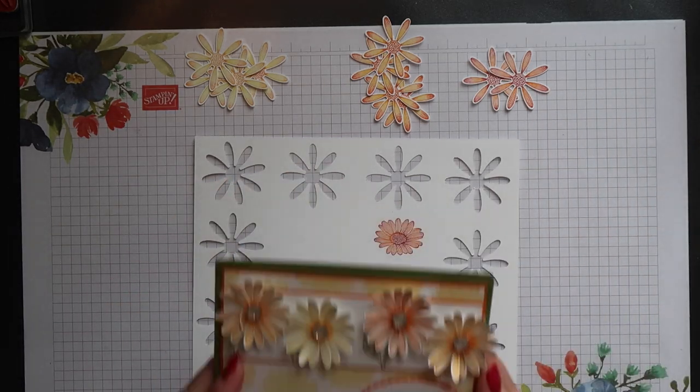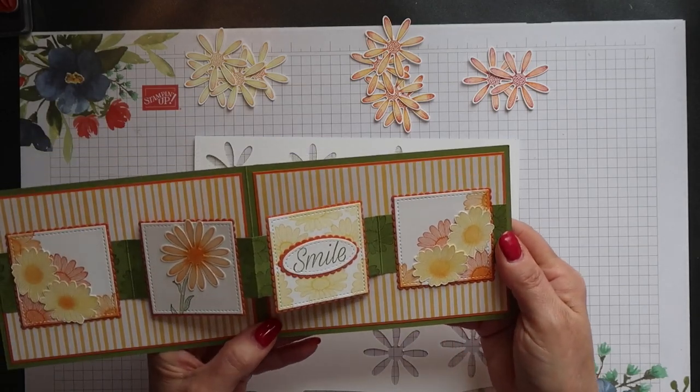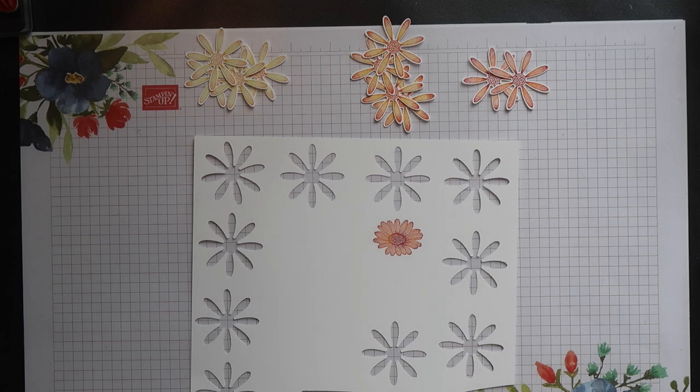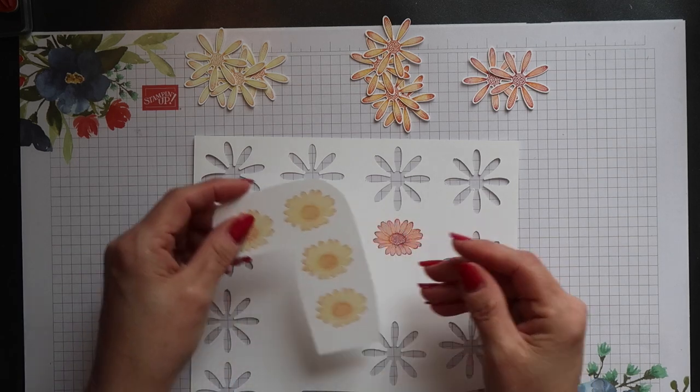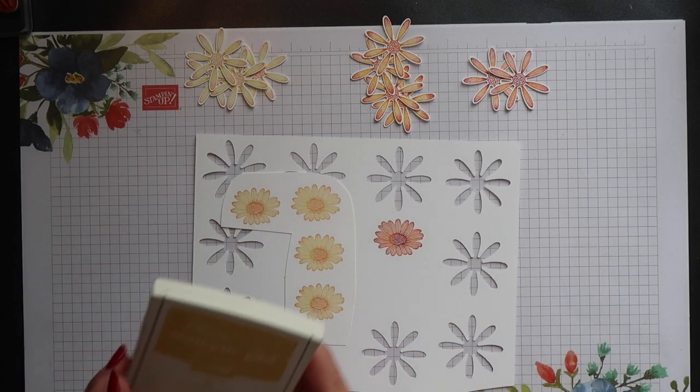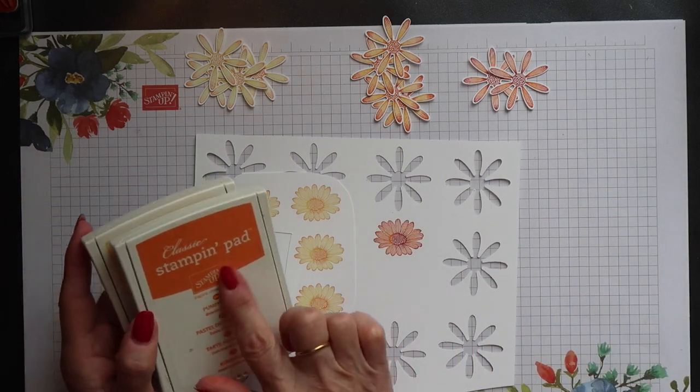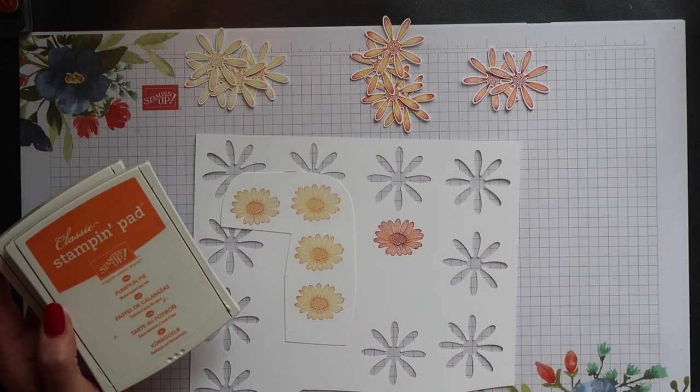Inside my original card there are an additional four daisies that I've stamped and cut out by hand. I've already stamped these ready for my new card, again I started with Daffodil Delight and then I used Pumpkin Pie with a Sponge Dauber.